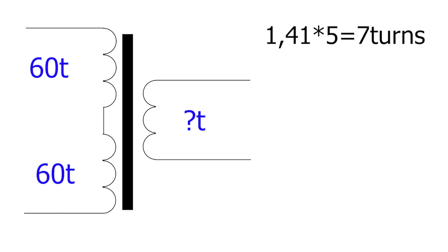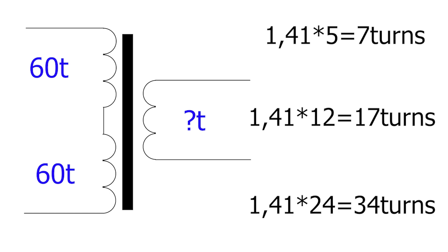For example, if you need to get 5 volts, multiply 1.41 and get 7 turns. If you need 12 volts, then multiply 1.41 by 12. It turns out 17 turns. And if you need 24 volts at the output of the power supply, then we get 34 turns.